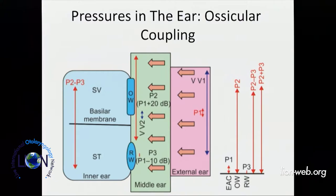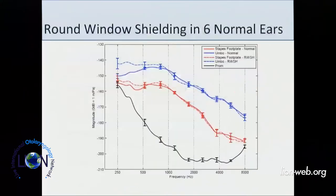Round window shielding makes no difference normally, because the ear is driven totally by the gain at the oval window. We've done these experiments — we shielded the round window with silastic and clay and it made no difference in a normal ear. Round window shielding normally makes no difference.